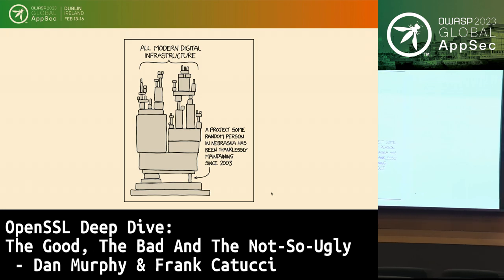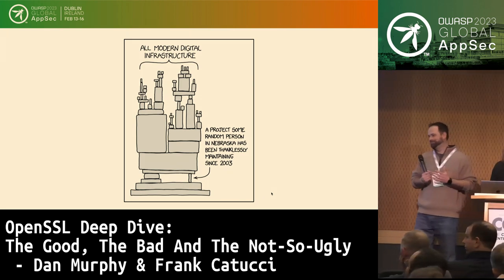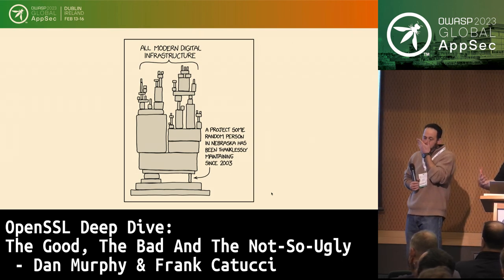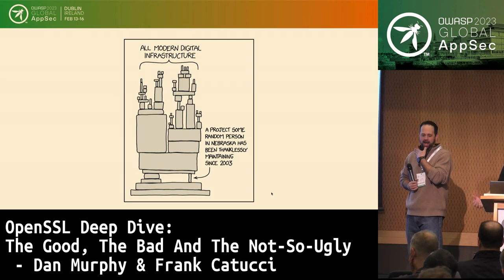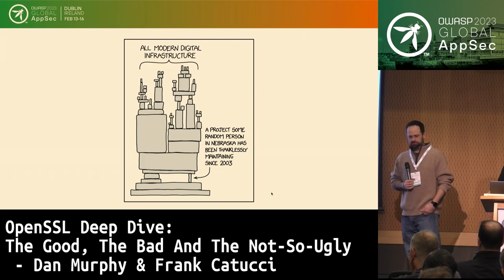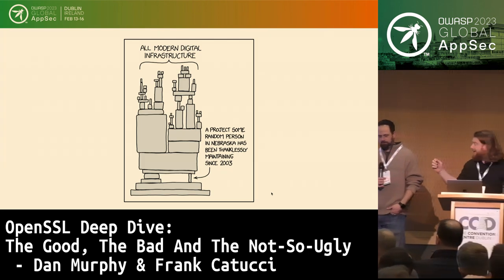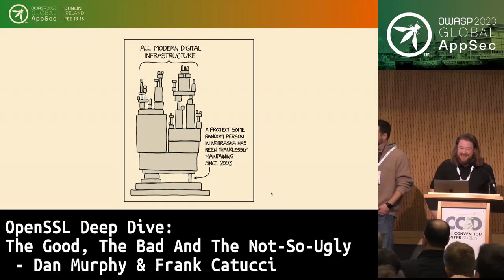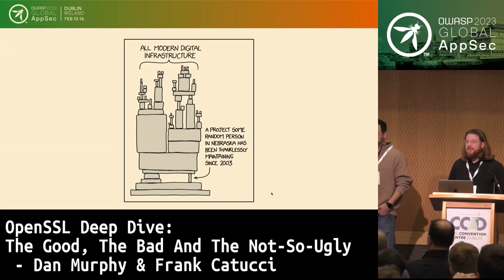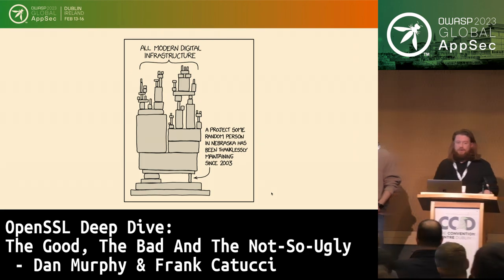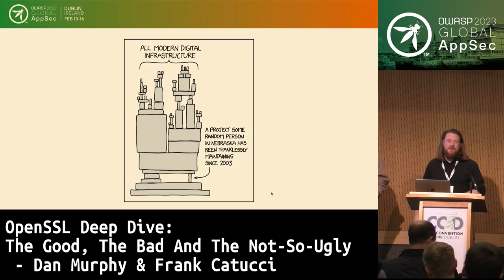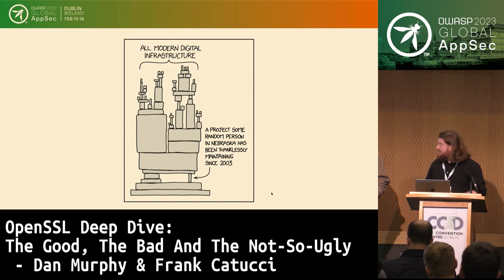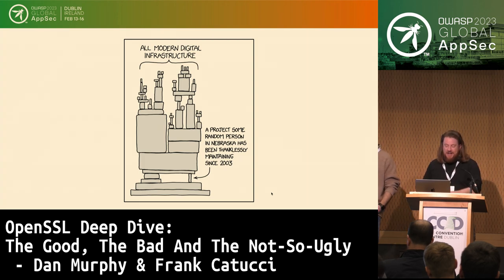And here's the obligatory XKCD slide. OpenSSL truly is one of those foundational pieces of software - it's everywhere, you don't see it, but it's that little Jenga block in the lower right that's holding up so many different systems. This talk is really about what happens when you have a ripple - what happens when that little Jenga block starts to wiggle? What's the story behind those vulnerabilities, and what's the impact on the ecosystem?